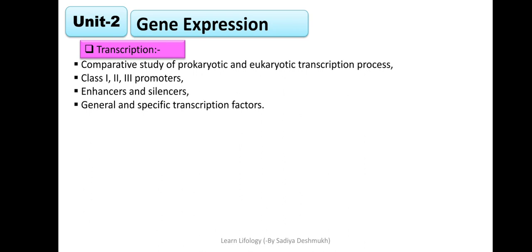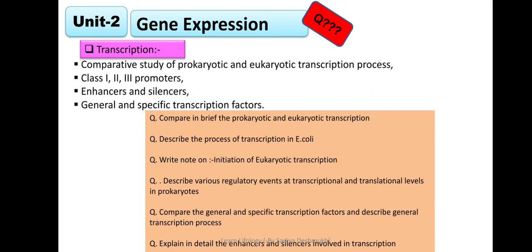Now, what questions come from transcription? This unit is vast; it is the most vast unit in the entire paper. From transcription: comparing briefly prokaryotic and eukaryotic transcription, describe the process, write a note on initiation or sometimes only on elongation. Describe various regulatory events - this is most important. We don't understand this: regulatory events are transcriptional and translational. Again, the role of enzymes comes. Compare the general and specific transcription factors. Then details on enhancers and silencers: what they do and how they work, explain in detail in transcription.